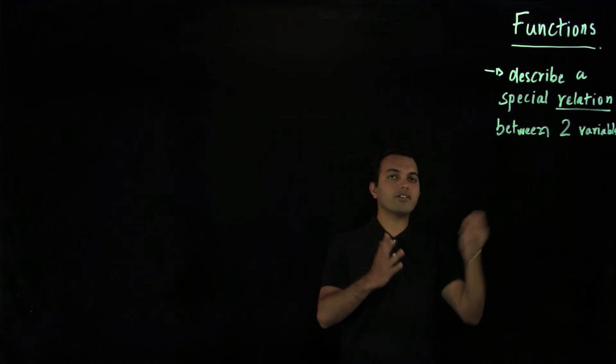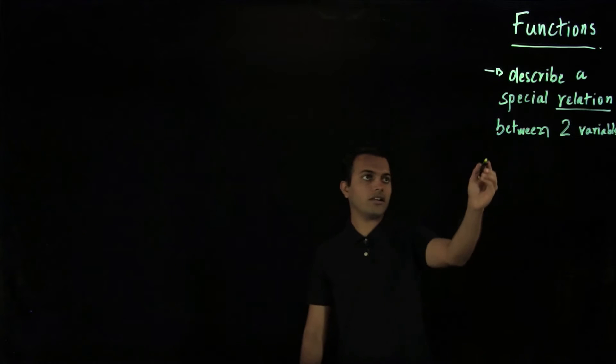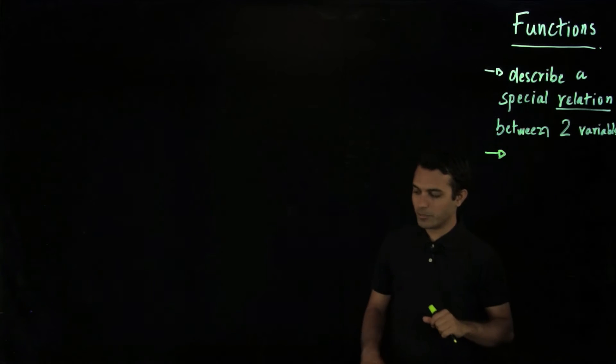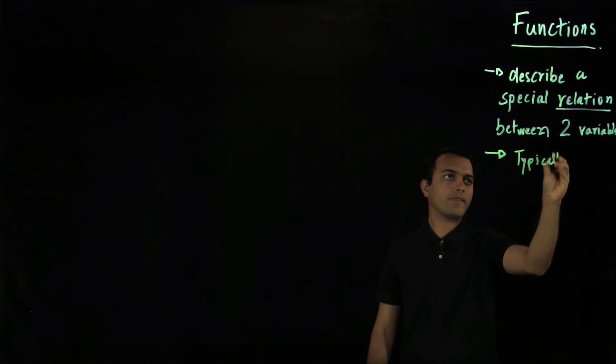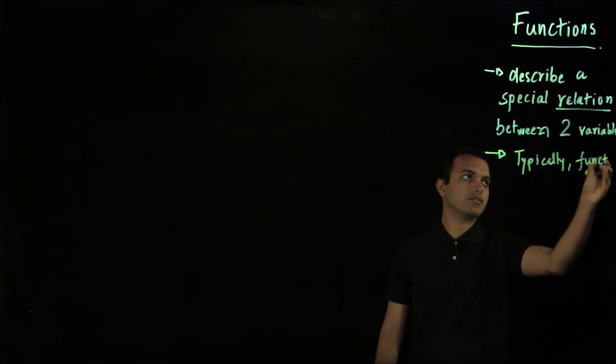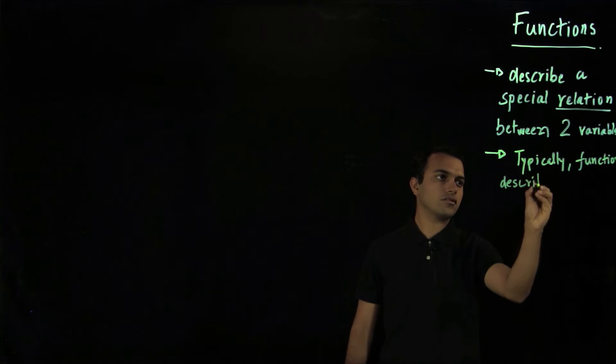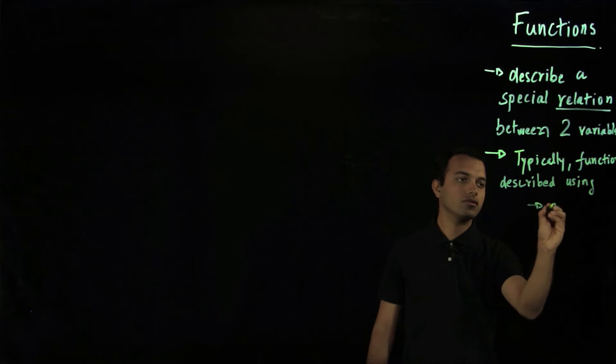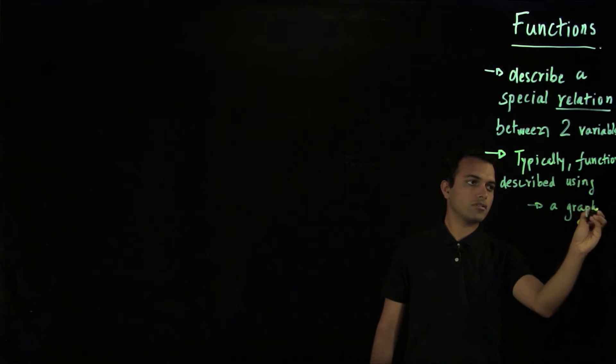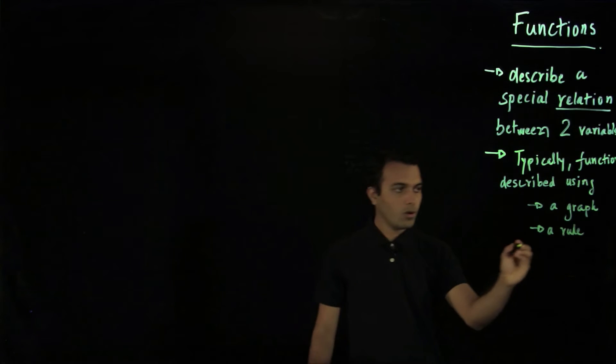So this is a very intuitive description of functions. And in order to define it for our use, mathematicians use different types of descriptors for functions. Typically, functions are described using a graph, a rule, or an equation.